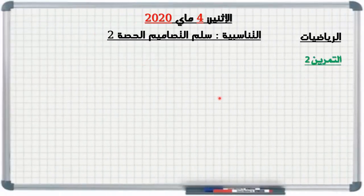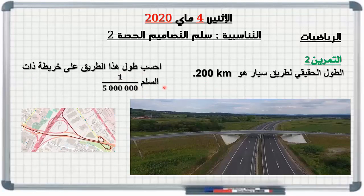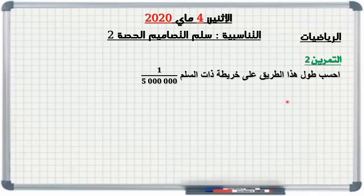ننتقل للتمرين الثاني: الطول الحقيقي لطريق سيار هو مئتا كيلومتر. السؤال: احسب طول هذا الطريق على خريطة ذات السلم واحد على خمسة مليون. نريد أن نرسم هذا الطريق السيار في خريطة سلمها واحد على خمسة مليون. سأطلب منكم إيقاف المقطع والبحث عن الجواب.